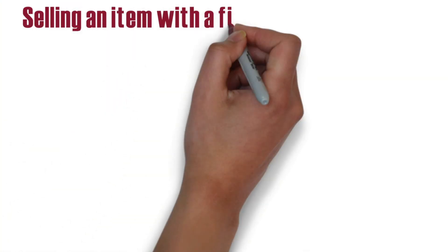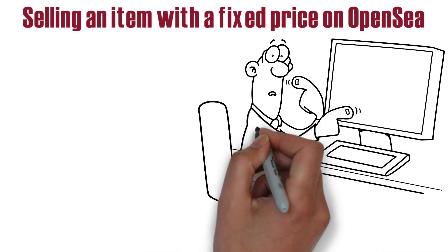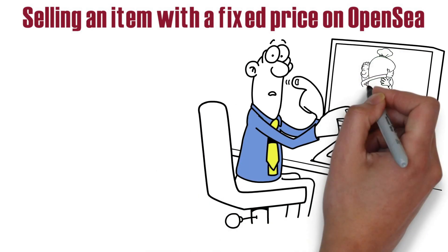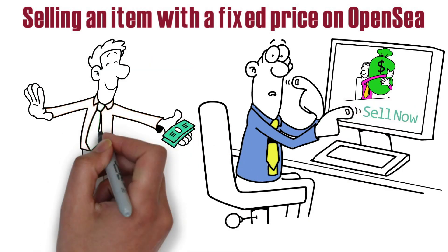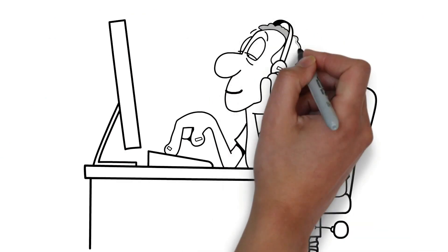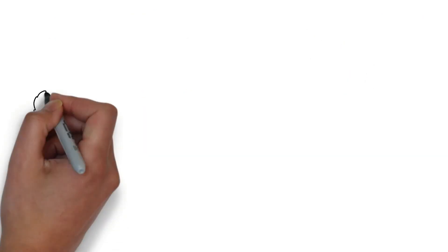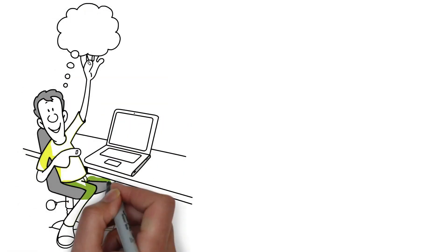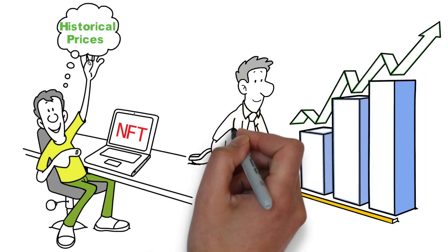Selling an item with a fixed price on OpenSea: when you found the NFT you'd like to sell, click the Sell Now option to add your desired price and access the confirmation screen. On this page, you can choose whether or not you'd like to create a reserve price — the lowest price at which the item can be sold. If no one purchases it for this amount, it will remain in your store. You'll also see an approximate value of the NFT you're selling based on historical prices, which you can use as one measure of your expected return on the sale.